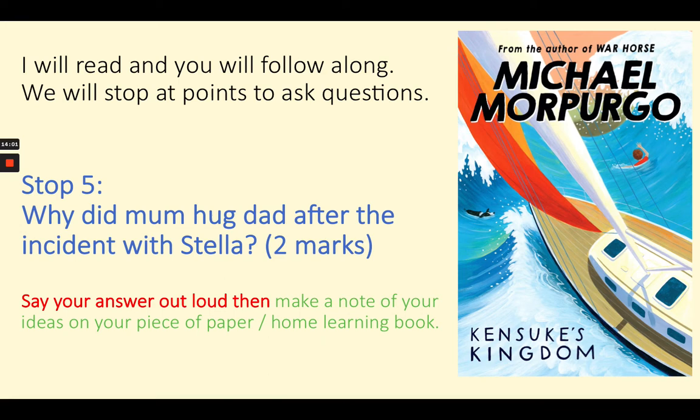February 7th. We're hundreds of miles out in the Indian Ocean, and then this happens. Stella hardly ever comes up on deck unless it's flat calm. I don't know why she came up. I don't know why she was there. We were all busy, I suppose. Dad was brewing up down in the galley, and Mum was at the wheel. I was doing one of my navigation lessons, taking bearings with the sextant. The Peggy Sue was pitching and rolling a bit. I looked up and I saw Stella up at the bow of the boat. One moment she was just standing there. The next she was gone.